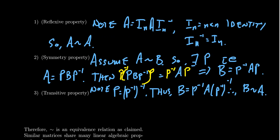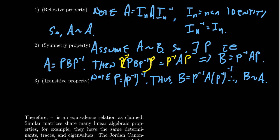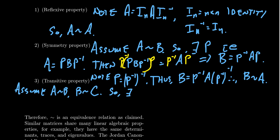Transitivity is the last one we want to show. To show transitivity, we assume that A is similar to B and that B is similar to C. So there exist matrices P and Q such that A equals P B P inverse, and we also have that B equals Q C Q inverse.